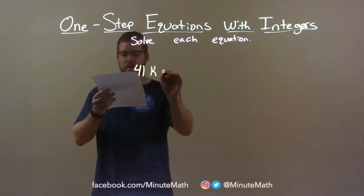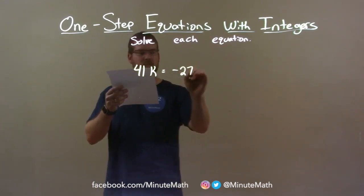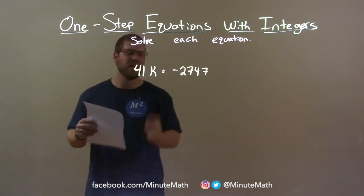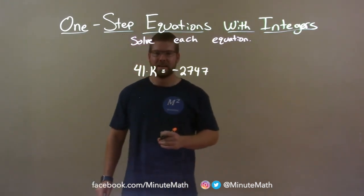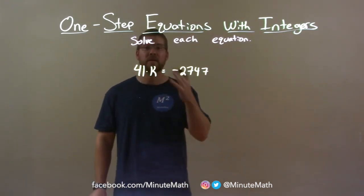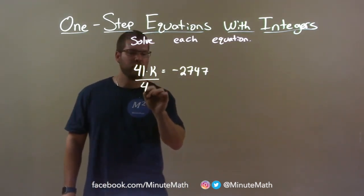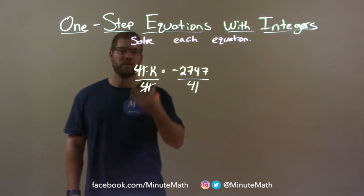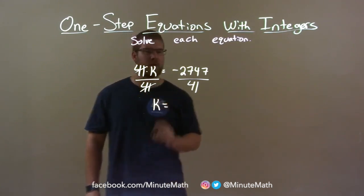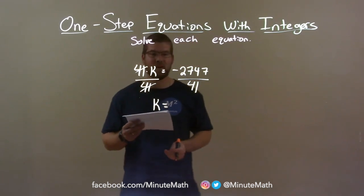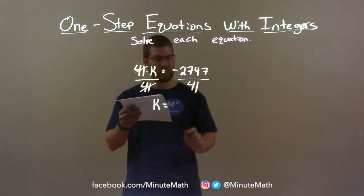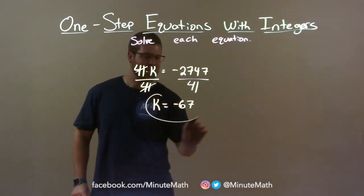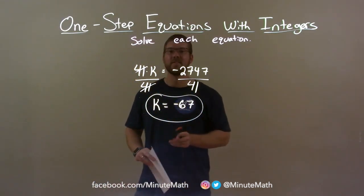41k equals negative 2,747. There's a multiplication going on between 41 and k. Opposite of multiplication is division. So if I divide both sides by 41, the 41s on the left cancel, giving me k by itself. Now, negative 2,747 divided by 41 is negative 67. So my final answer is k equals negative 67.